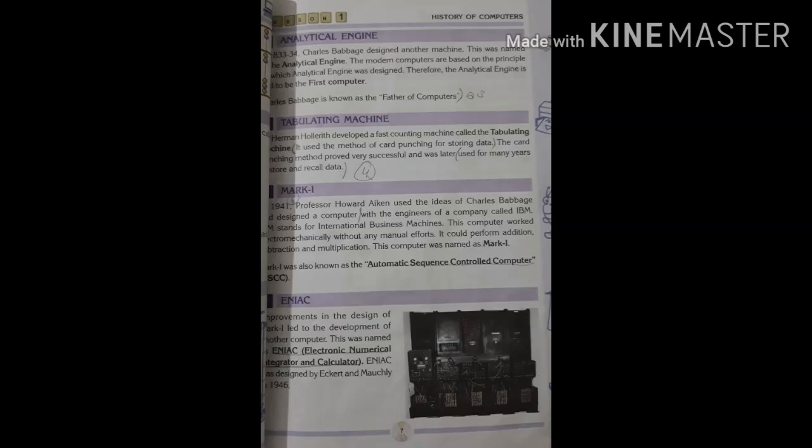In 1941, Professor Howard Aiken used the idea of Charles Babbage and designed a computer with the engineers of a company called IBM. IBM stands for International Business Machines. This computer worked electronically without any manual efforts. It could perform addition, subtraction and multiplication. This computer was named Mark 1. Mark 1 was also known as Automatic Sequence Controlled Computer, ASCC.